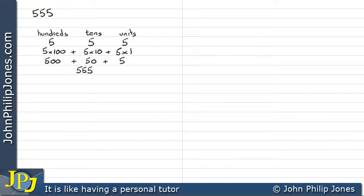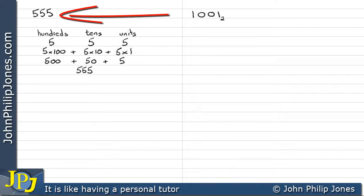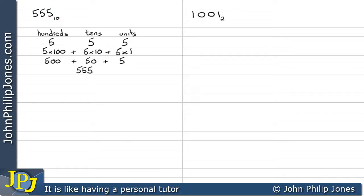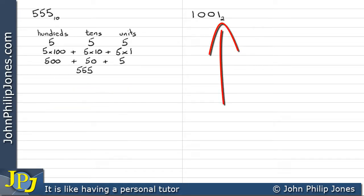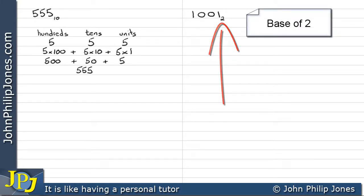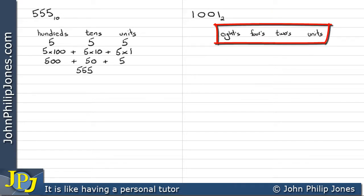Let's write down a binary number that represents a quantity of nine — it looks like this: one zero zero one. In our denary number system you would say that looks like one thousand and one, but in fact it is nine in binary. To avoid confusion between binary and decimal and other number systems, I'm going to put a little subscript two next to binary numbers as a memory aid. Similarly, for the denary number 555 I'll put a subscript ten, because there are ten figures in denary — it is said to have a base of ten. Binary has a base of two because it only has two figures: one and zero.